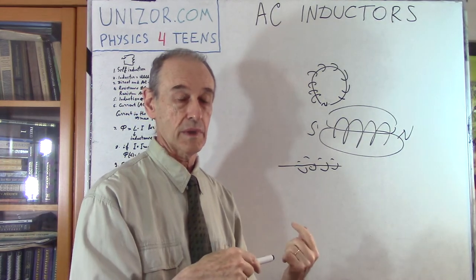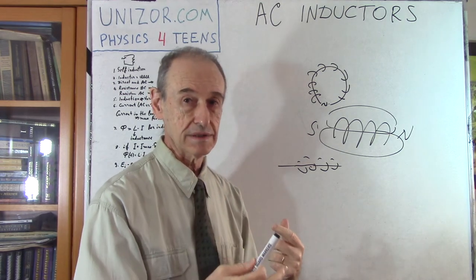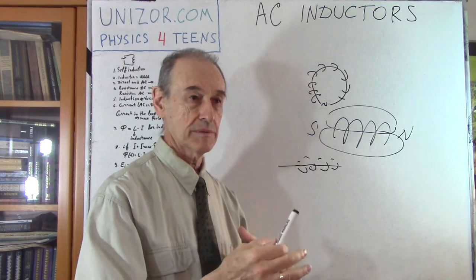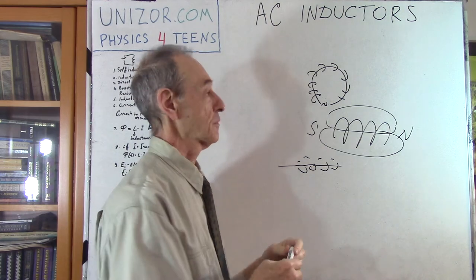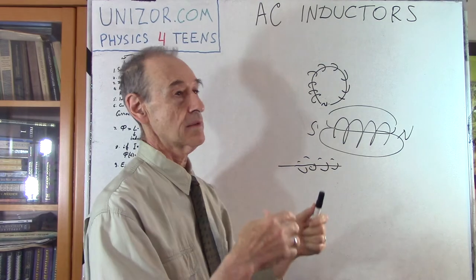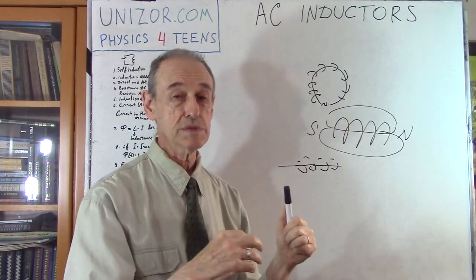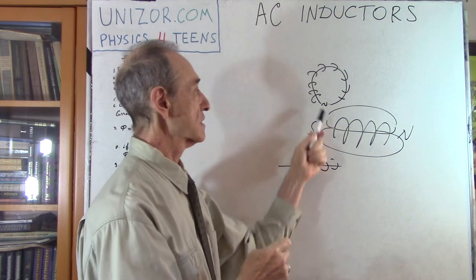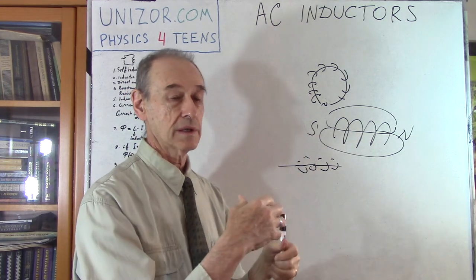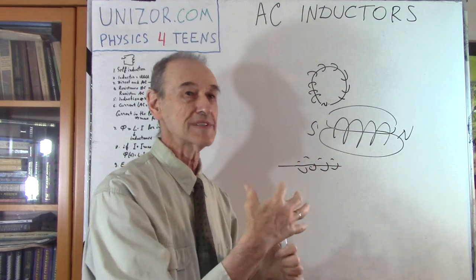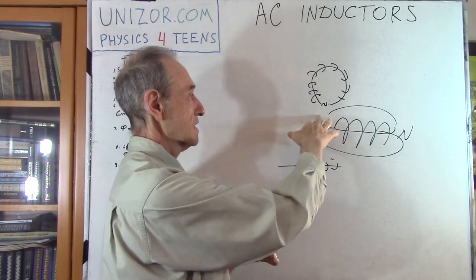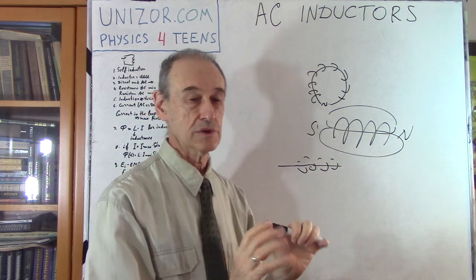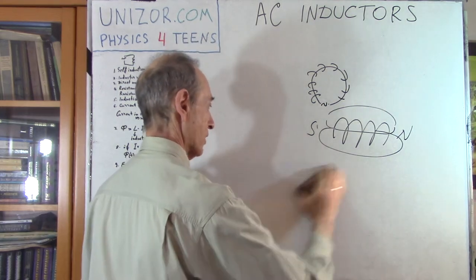Not only do you have a magnetic field generated by the original AC, but you also have a magnetic field induced by the fact that the first original magnetic field is changing. So you have self-induction — that's what it is. You have additional EMF. You have one EMF created by the original source of alternating current, and then you have an EMF induced by the fact that this magnetic field is changing. And the induced, self-induced EMF is always against the original one. It tries to move electrons in the opposite direction. When the field increases, the self-inducted EMF tries to reduce the speed of this increase. If the original EMF is reducing, then the EMF generated through self-induction is trying to support it. So this is the concept of self-induction — it's very important.